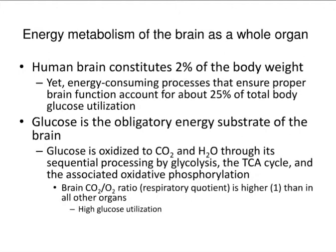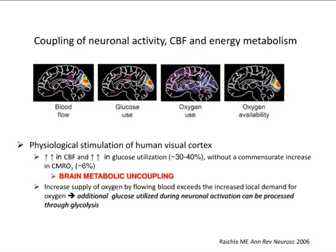First of all, energy metabolism of the brain as a whole organ. The human brain constitutes 2% of the body weight, yet energy-consuming processes that ensure proper brain function account for about 25% of total body glucose utilization. The second paradigm is that glucose is the obligatory energy substrate of the brain, oxidized to CO2 and water through glycolysis, the tricarboxylic acid cycle, and phosphorylation. The brain's respiratory quotient is 1, higher than all other organs, indicating higher glucose utilization.